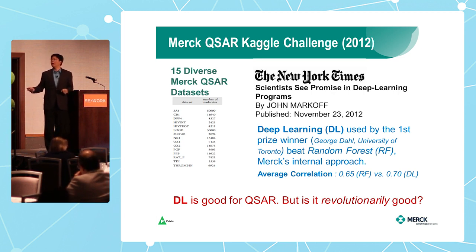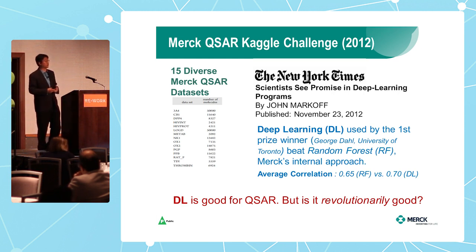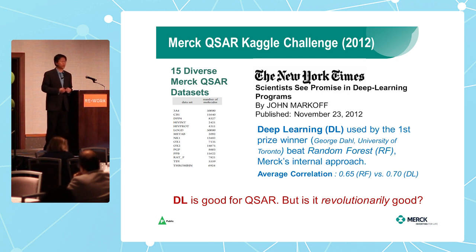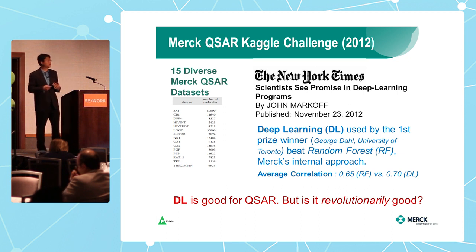The improvement: our average random forest gave 0.65 correlation and deep learning gave 0.70. You might consider this a small improvement, but for us it's considered huge because for 10 years we never saw a method beat random forest. Almost every day we are approached by small companies trying to show their method is better — 99% of the time it's worse than random forest. But deep neural net clearly gave us a lead. This was the moment that triggered our interest in deep learning.